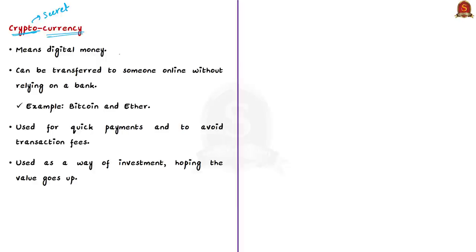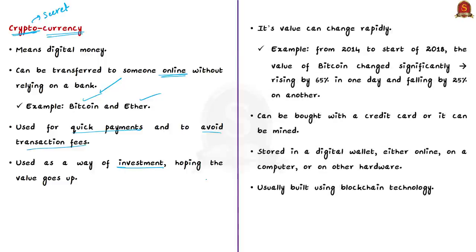Well-known cryptocurrencies include Bitcoin and Ether. Even today, new cryptocurrencies are being created. People might use cryptocurrencies for quick payments, to avoid transaction fees, or as an investment hoping the value goes up. Remember that a cryptocurrency's value can change by the hour. An investment worth thousands of US dollars today might be worth only hundreds tomorrow, with no guarantee it will go up again. For example, the values of Bitcoin changed significantly — raising by 65% in one day and falling by 25% on another day — whereas oil prices didn't change by more than 10% in one day from 2014 to early 2018.